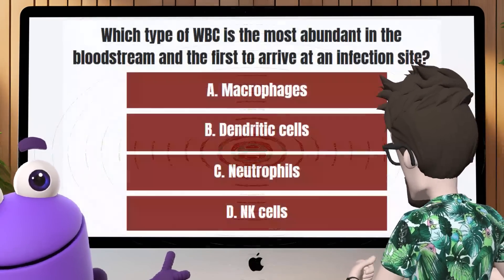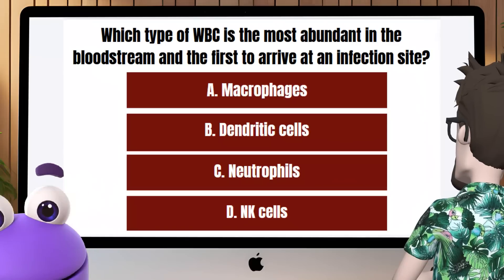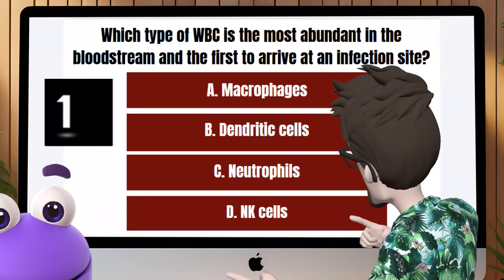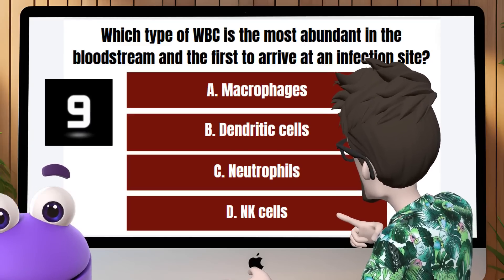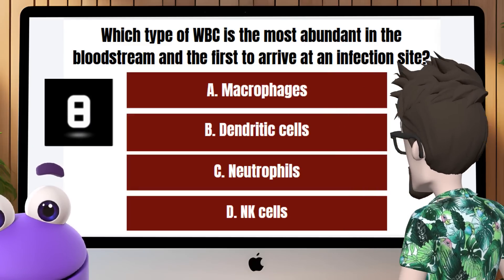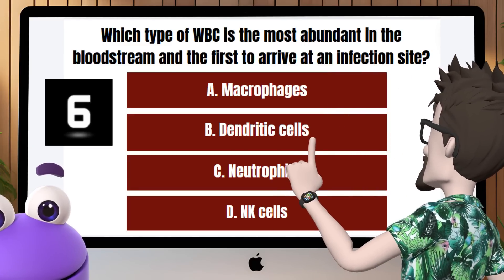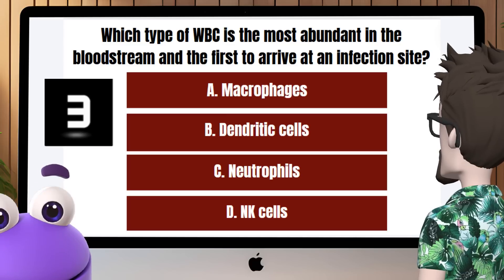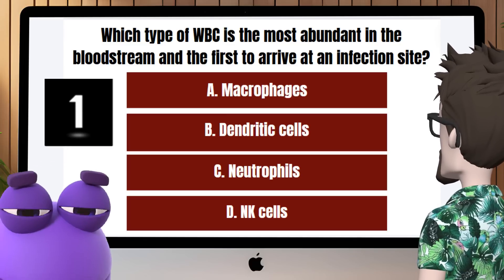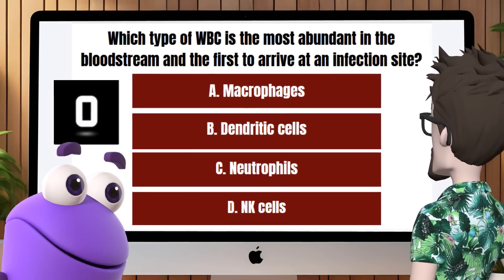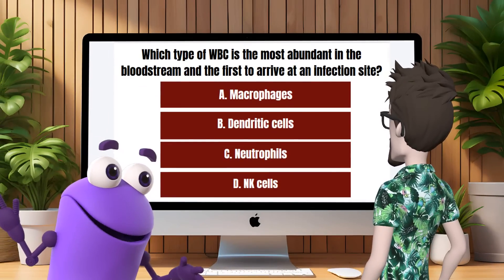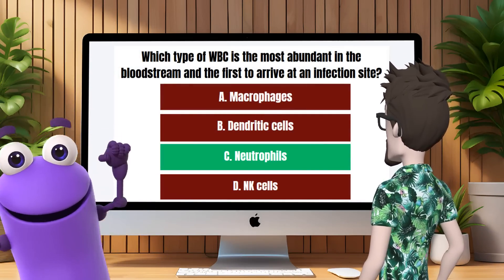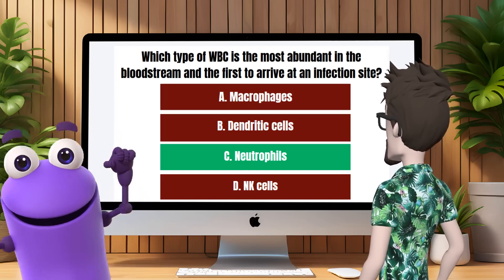Question 8: Which type of white blood cell is the most abundant in the bloodstream and the first to arrive at an infection site? C, neutrophils. Exactly. Neutrophils are the most abundant white blood cells and the first responders to infection sites.